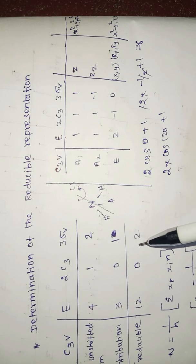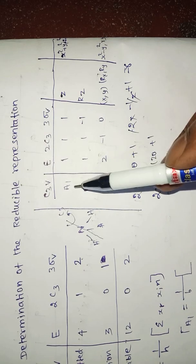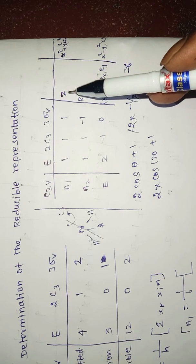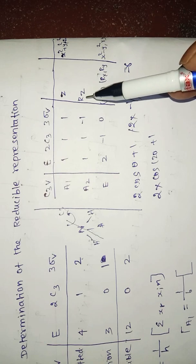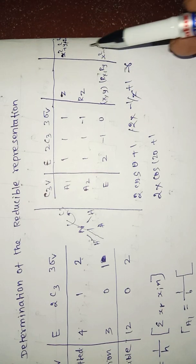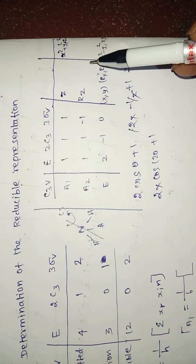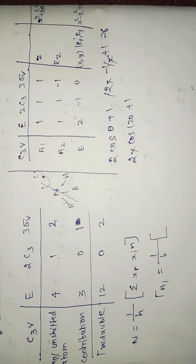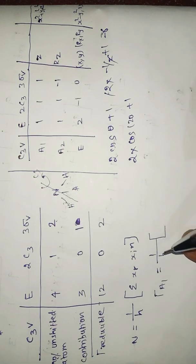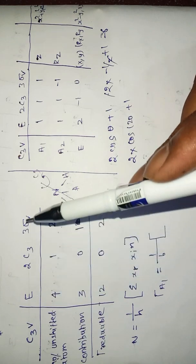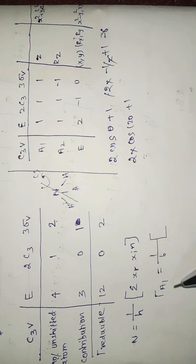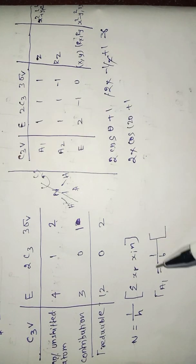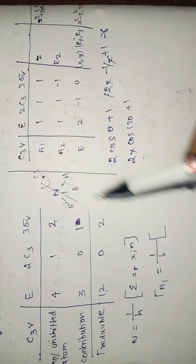Looking at the character table, we have symmetry species A1, A2, and E. The symmetry operations include linear operations and rotations. These can be mapped to the x, y, z coordinates. We calculate the reducible representation and note that E is a 2-dimensional irreducible representation.